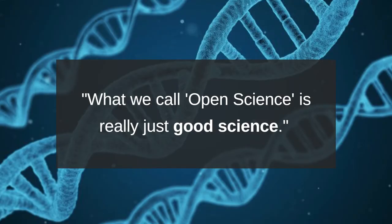As John Tennant, a paleontologist and major advocate for open science has stated, there isn't really one consistent or widely accepted definition of what open science is. For some, he says, open science is about using science to help address the major challenges of society. For others, open science is about democratization of research processes and outputs. What is clear, though, is that what we call open science is really just good science, based on strong social and technical principles like rigor, accountability, transparency, and equality.